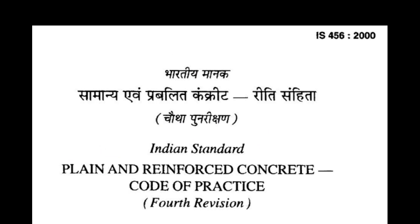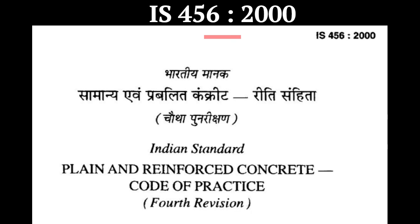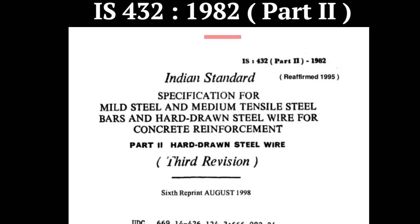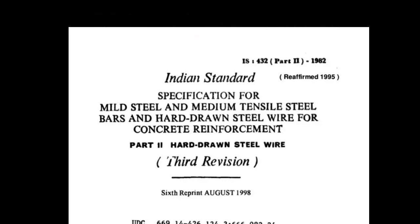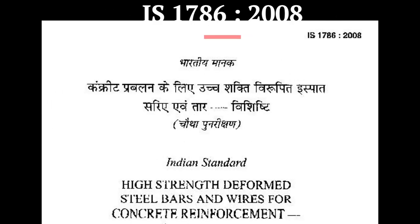Question 4: Do you know what codes are used for RCC? The most important code for RCC is IS456-2000. IS-432-1982-Part-2 covers specifications for mild steel and medium tensile steel bars and hard-drawn steel wire for concrete reinforcement. IS-1786-2008 covers high-strength deformed steel bars and wires for concrete reinforcement specification.